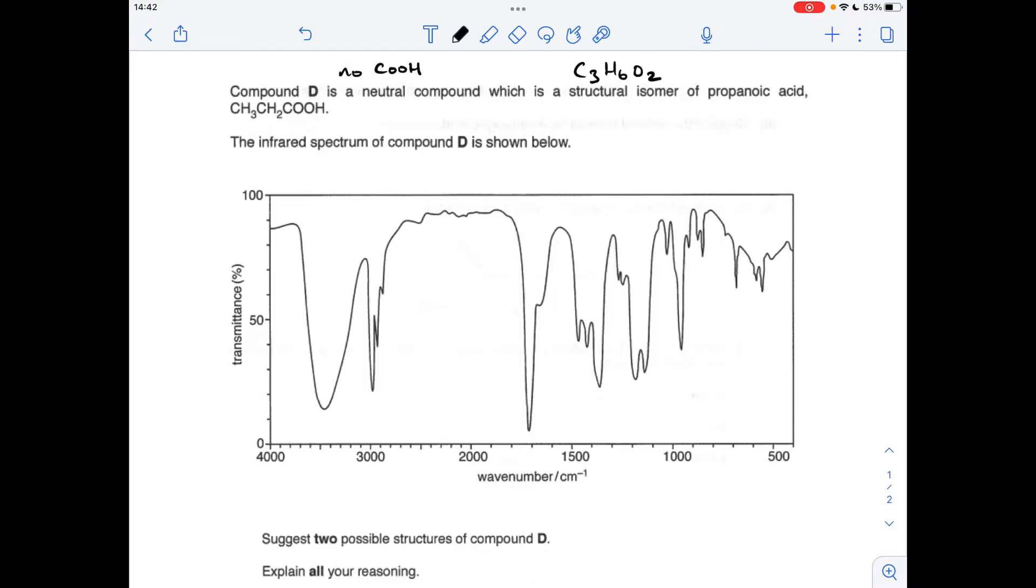The other key area I look at is around about 1700 centimeters to minus one, and you can see we've got an obvious peak there, so that's due to a C double bond O.